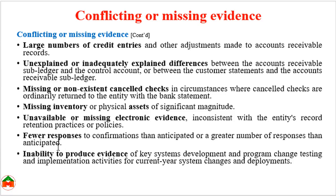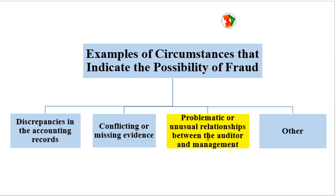Additionally, whenever there are fewer or greater responses to confirmations than anticipated — as an auditor, if you receive fewer or more responses than expected against your queries, that indicates the possibility of fraud risk. Finally, an inability to produce evidence of key systems development, program change testing, and implementation activities for current year system changes: if there is a change with no clear evidence of the reasons, that also indicates fraud risk.